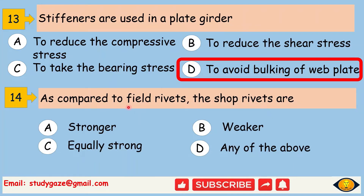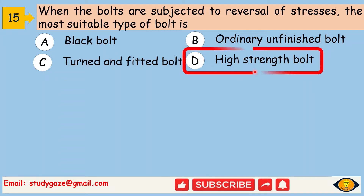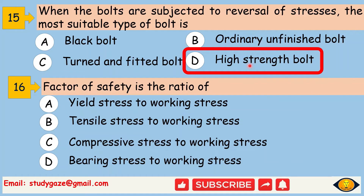As compared to field rivets, the shop rivets are stronger than the field rivets. Next, when the bolts are subjected to reversal of stresses, the most suitable type of bolt is a high strength bolt. Next, factor of safety is the ratio of yield stress to working stress.